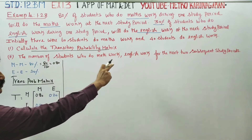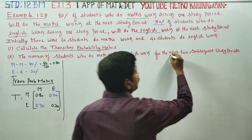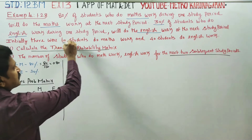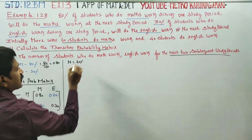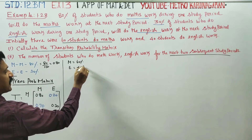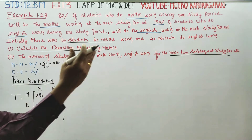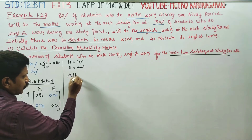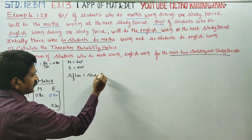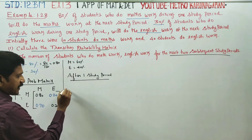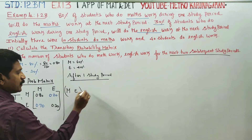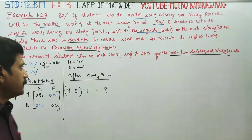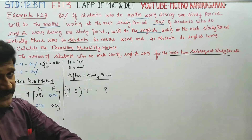Now, the question asks for the number of students who do Maths work and English work for the next two subsequent study periods. The present situation is: Maths is 60% and English is 40%.